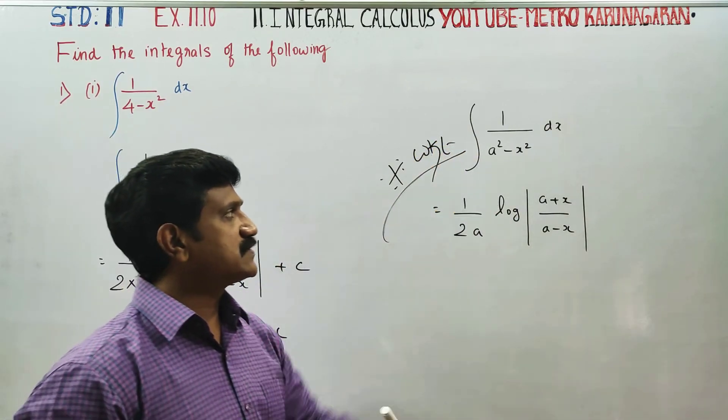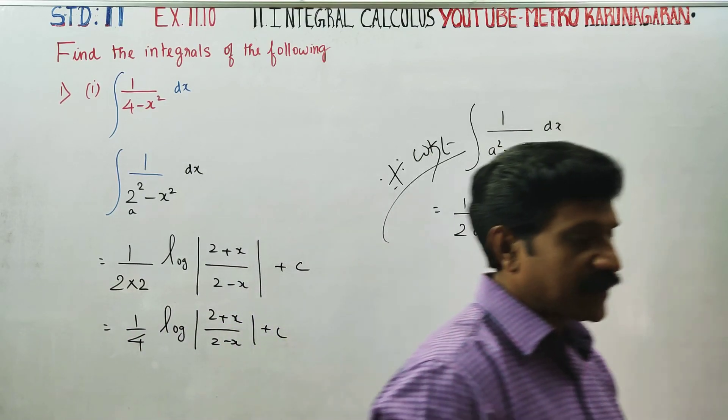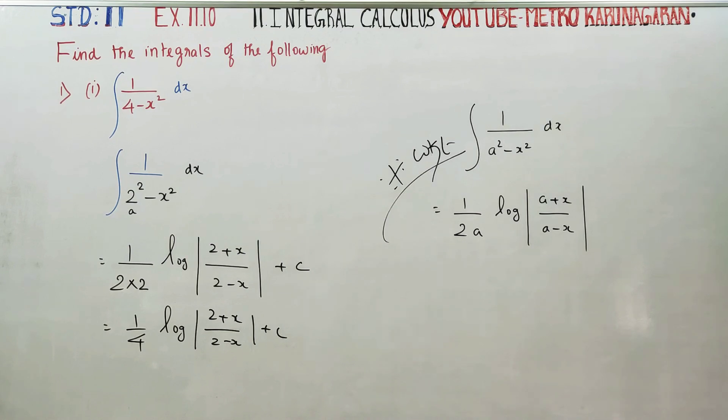1 by a square minus x square equals 1 by (a minus x)(a plus x). Using partial fractions with the factor 1 by 2a, we get the logarithmic form.